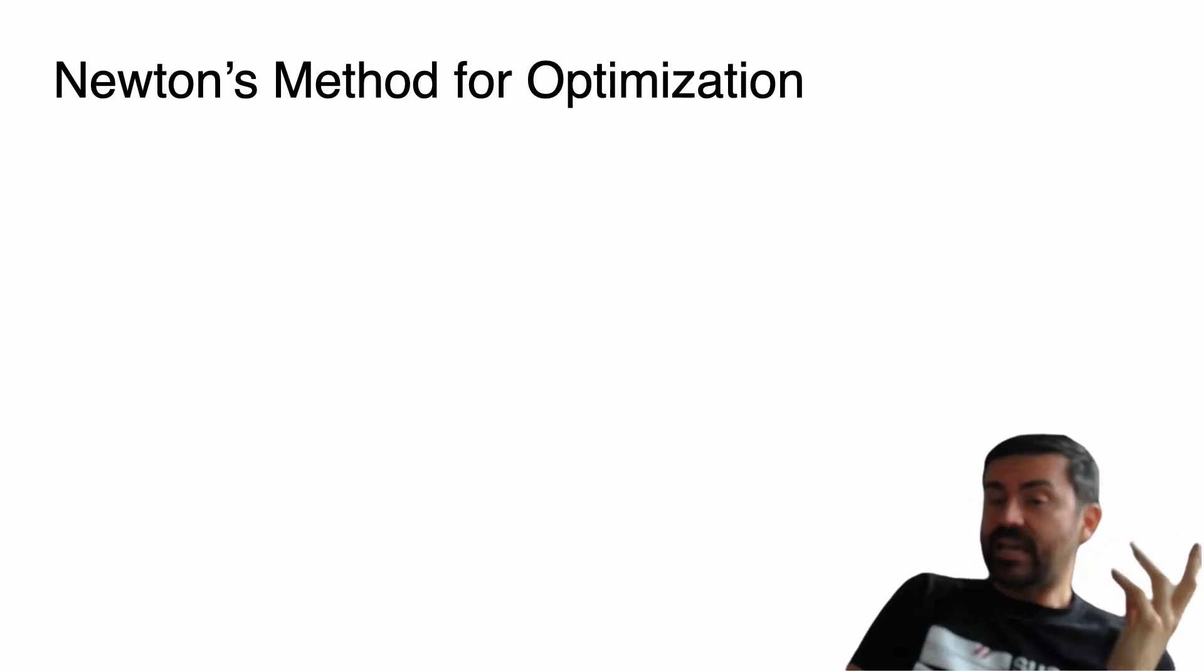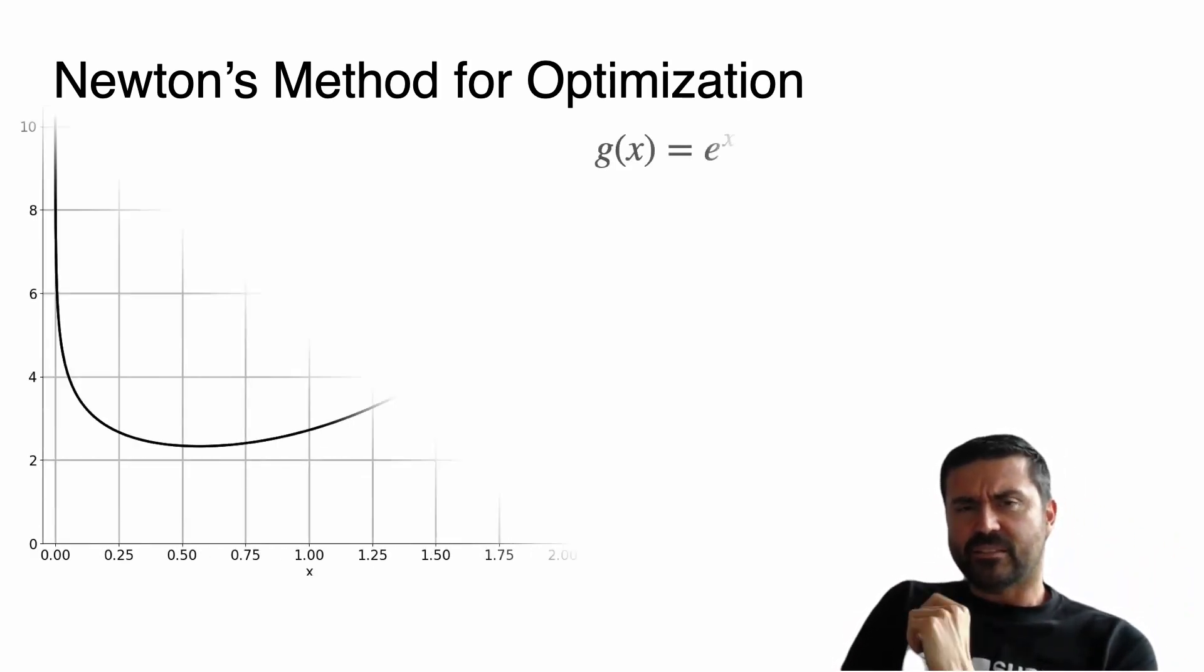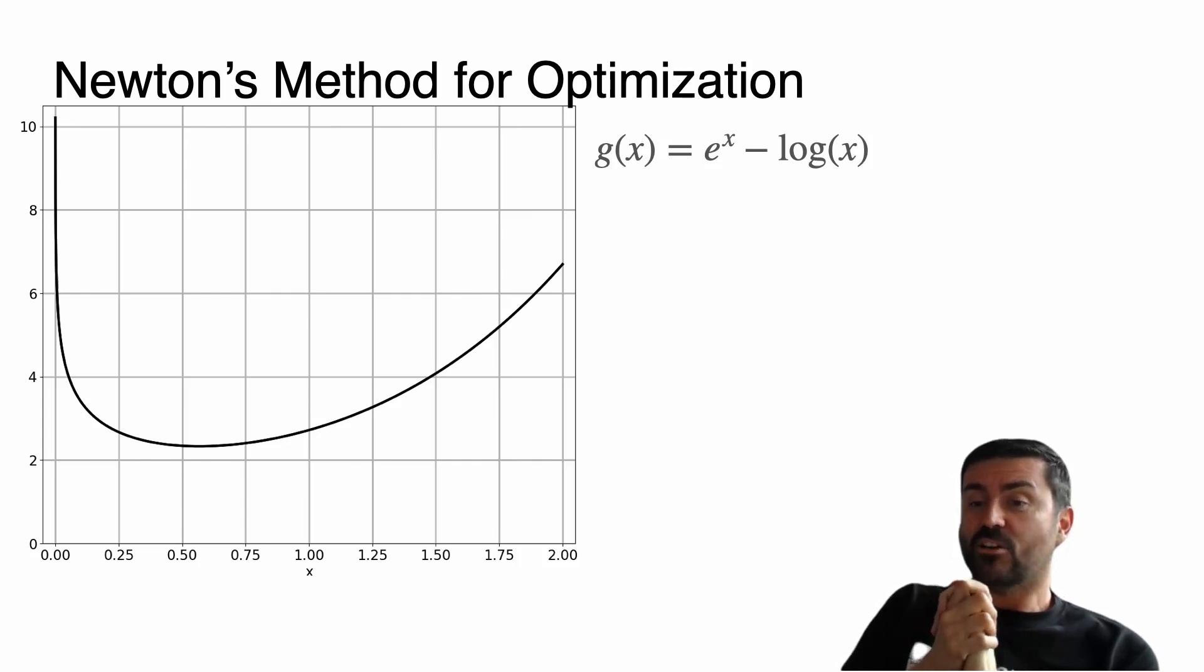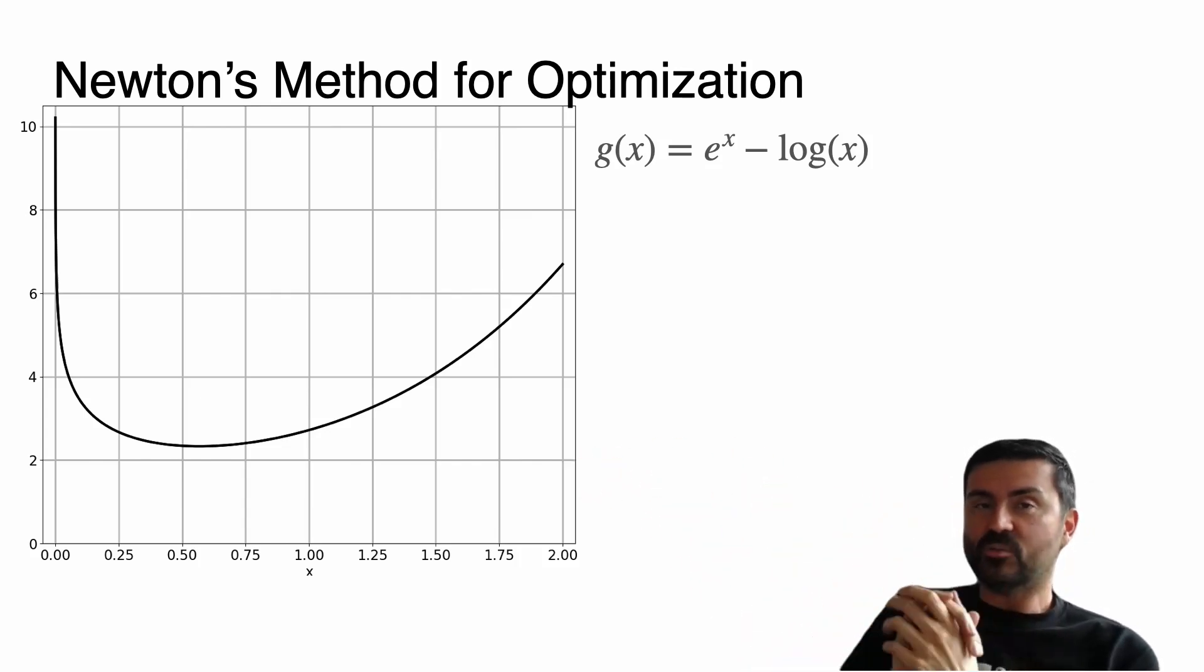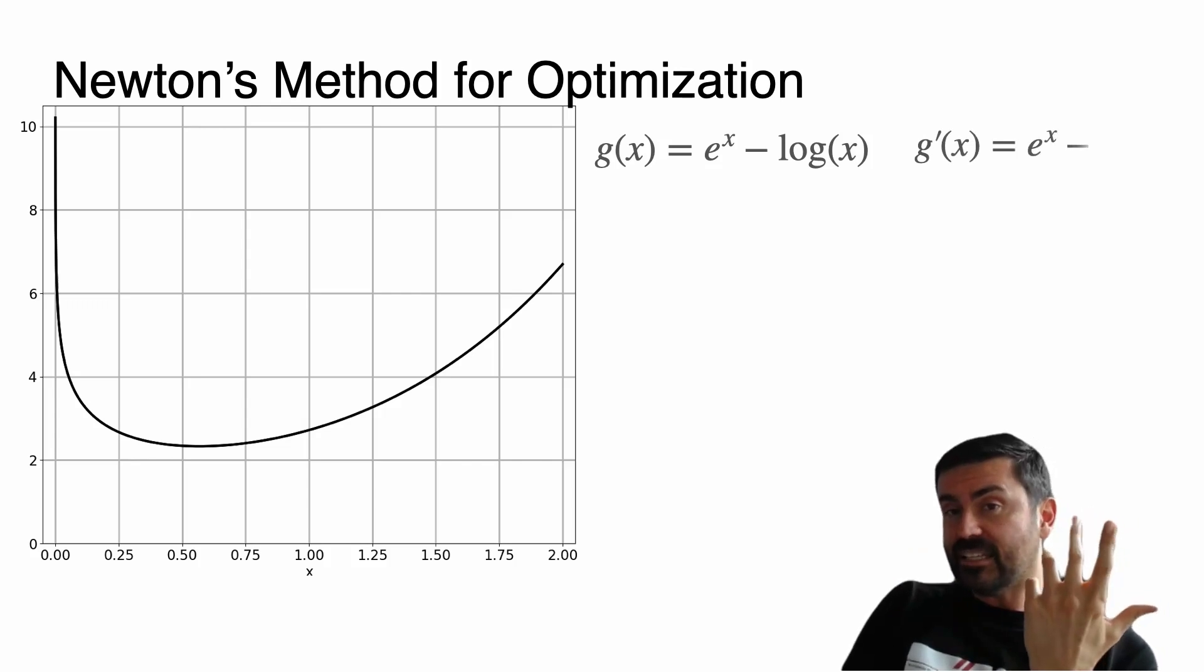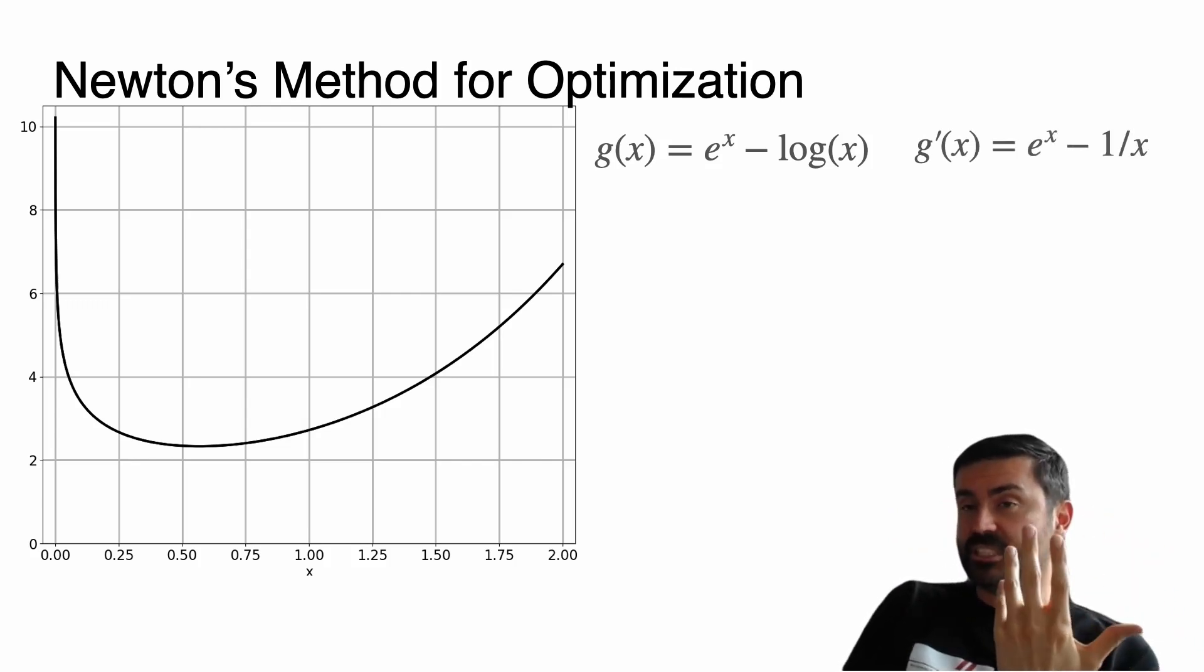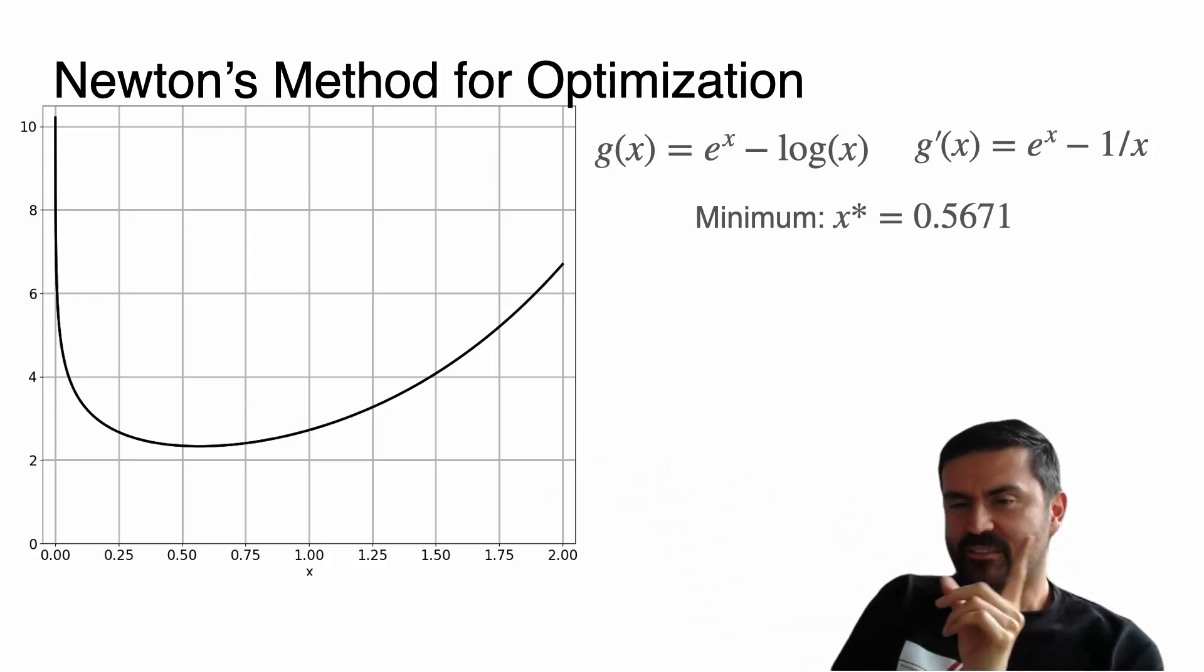So now let's get to an example. I'm going to pick a function that actually works really well for Newton's method: the function g(x) = e^x - log(x). That function is hard to minimize. It's actually pretty hard numerically to find the exact minimum of this function. But derivatives are nice to find because the derivative is e^x minus 1/x. The actual minimum of the function g is 0.5671, and we're going to see how many steps of Newton's method we can use to get really close to that number.